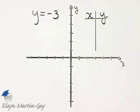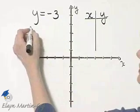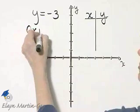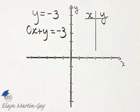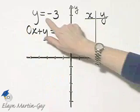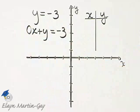Let's graph this linear equation. If it helps, you can think of this as 0x plus y is equal to negative 3. It will not affect the ordered pair solutions. These are equivalent equations.